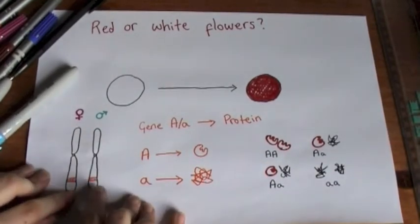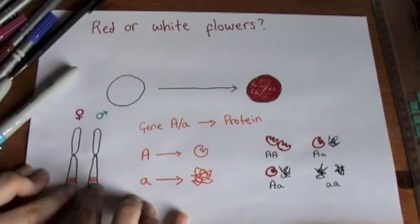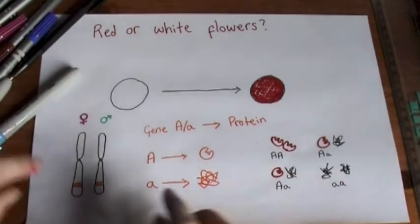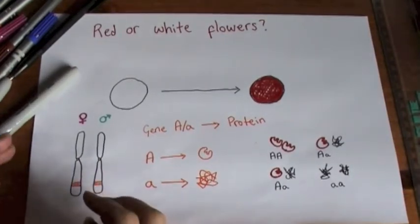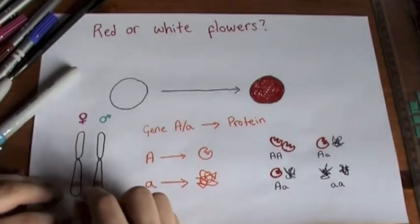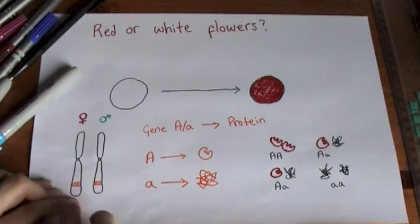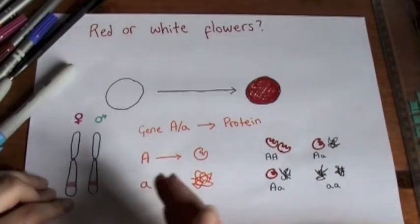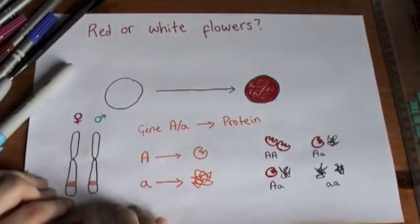And they both have exactly the same genes on them, so this orange bit here is saying gene A is found here. And each chromosome will have a slightly different version of that gene, and those are called the alleles, depending on how you say it.